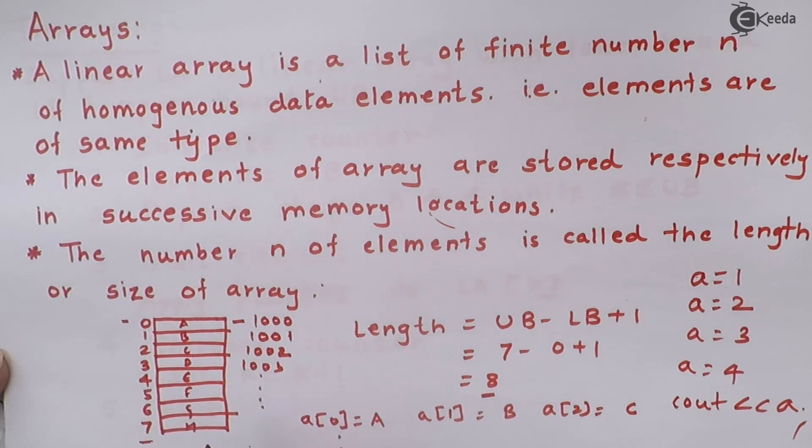It means this array is having total 8 elements into it and every element is referred by its index number. 0 to 7 they are called as index numbers. And all the elements will get stored one after the other. That is they will get stored in consecutive memory locations.